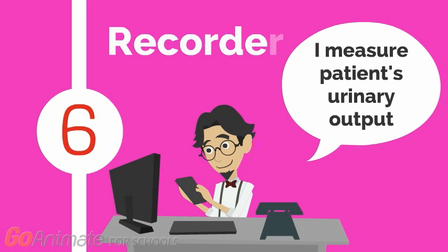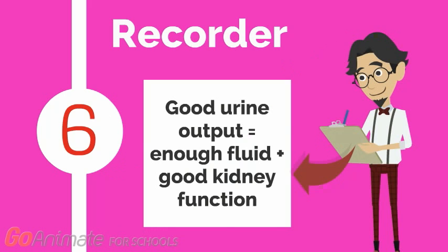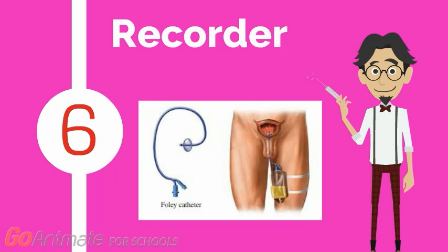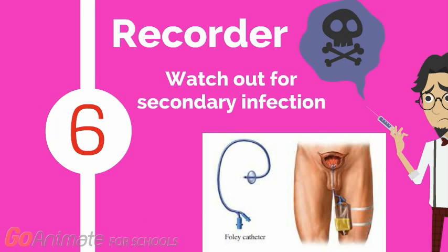Meet Sepsis 6, aka the Recorder. Sepsis 6 is keeping track of accurate urine output measurement. Fluid balance is often a good indicator of proper functioning kidneys and circulatory efficiency, and therefore it is an essential tool for sepsis management. Insertion of a urinary catheter is highly accurate in the measurement of urinary output; however, this method may also increase the risk of secondary infection and should receive careful monitoring.